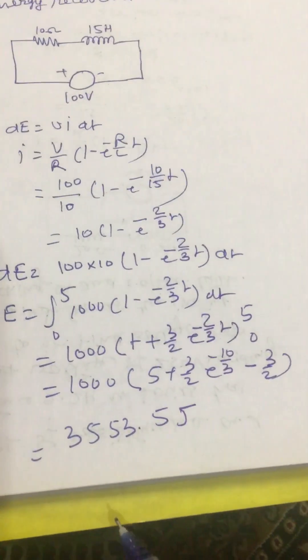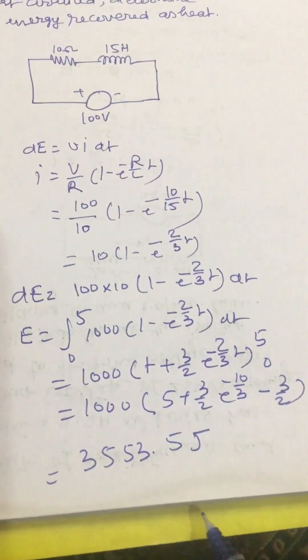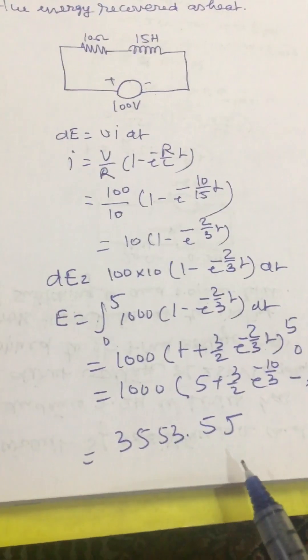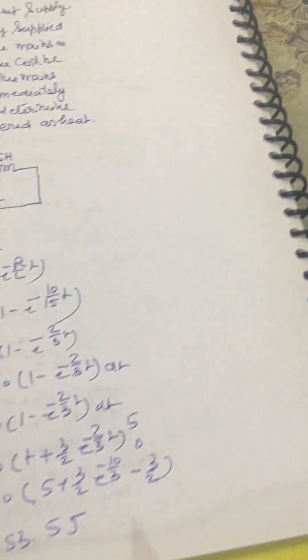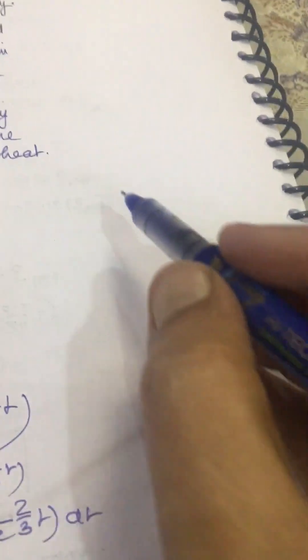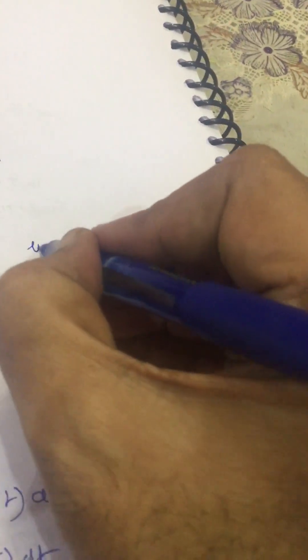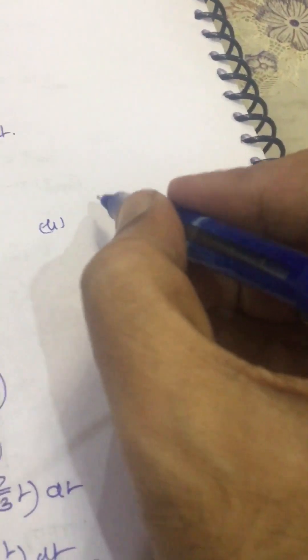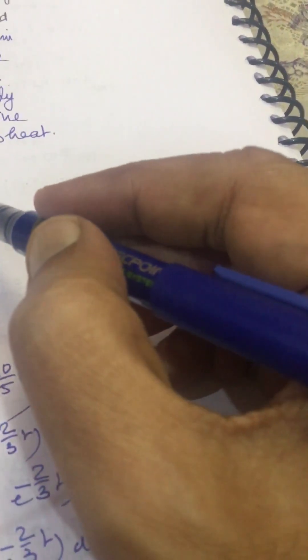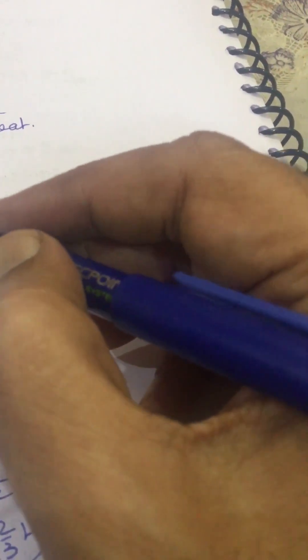This much energy will be supplied by the source in first 5 seconds. The second part asks how much energy will be recovered as heat. Whatever energy is stored at that instant will be recovered as heat on short-circuiting the supply.